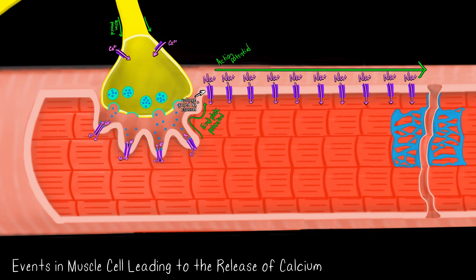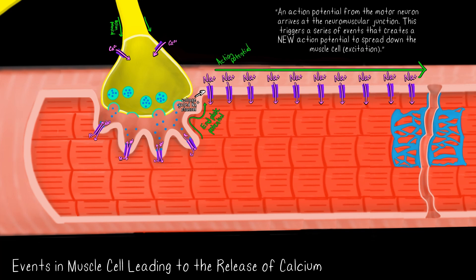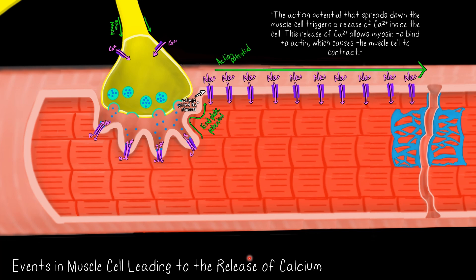Going back to that overview from the beginning, we have completed the first part. We had an action potential from the motor neuron that created a new action potential to spread down the cell membrane of the muscle cell — so we have excited the muscle cell. Now we have to see how does this cause calcium to be released, and how does that calcium being released allow myosin to bind to actin?